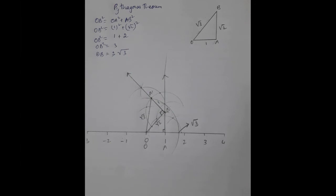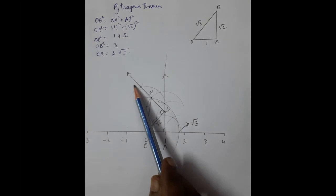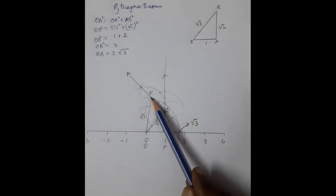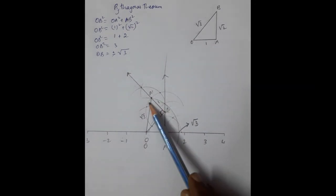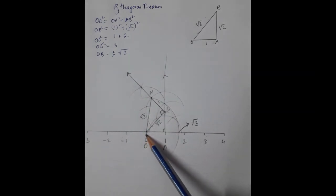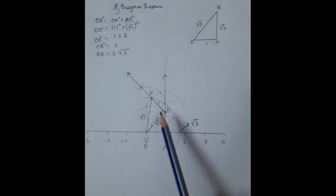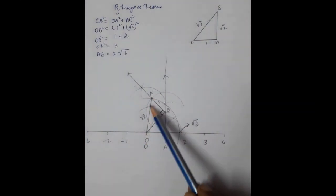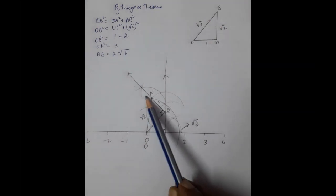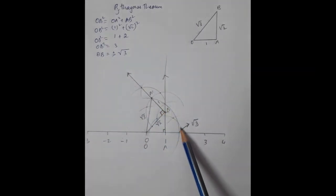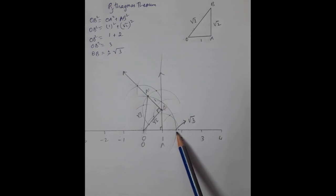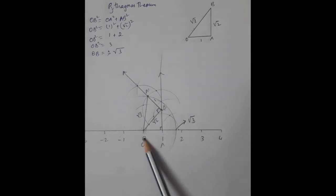If you know how to draw root 2, you can easily locate root 3. The only difference is we need to draw another perpendicular on the root 2 line, cut that perpendicular by 1 unit, and join the new point back to our original point O. That length is root 3 by Pythagoras theorem. We take that measurement, place the compass at O, and construct an arc. Wherever it cuts the number line becomes root 3.